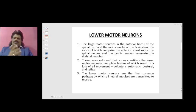Now let's talk about the lower motor neurons. The large motor neurons in the anterior horns of the spinal cord and the motor nuclei of the brainstem, the axons of which comprise the anterior spinal roots, the spinal nerves, and the cranial nerves, innervate the skeletal muscles.